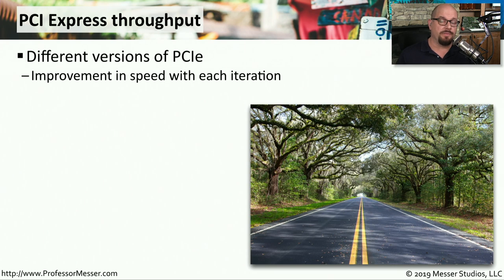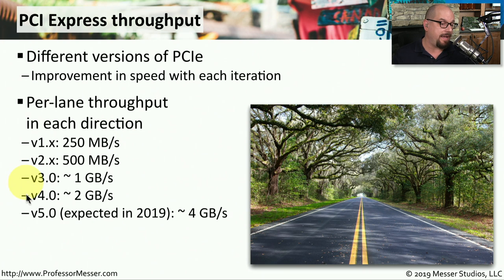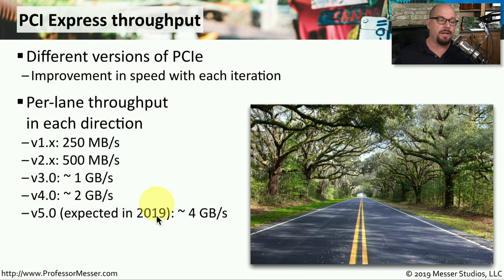PCI Express has had a number of different versions through the years, each bringing different speeds — you'll need to refer to your motherboard to see what version it supports. PCI Express version 1 supports 250 megabytes per second per lane in each direction. The most common version today is version 4.0, which supports 2 gigabytes per second of throughput per lane in each direction. Version 5.0, expected in 2019, should take speeds up to 4 gigabytes per second per lane in each direction.